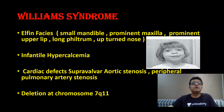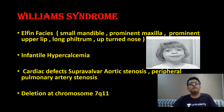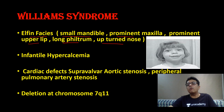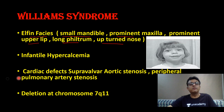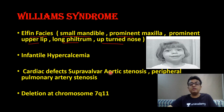Williams syndrome — they have classical elfin facies. What is elfin facies? Small mandible, prominent maxilla, prominent upper lip, long philtrum, and upturned nose. You can see: upper lip is prominent, long philtrum — the philtrum is the bridge here — chin is small, and upturned nose. These features are characteristic.